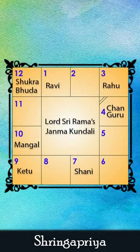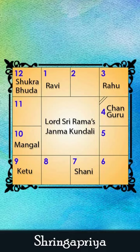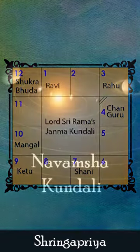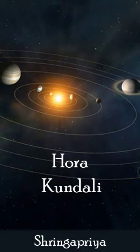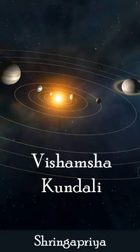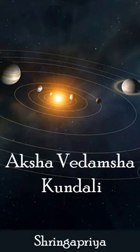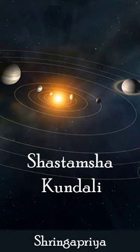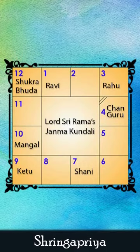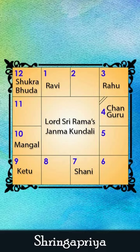In turn, many other horoscopes can be designed based on this. The different horoscopes are Navamsha Kundali, Hora Kundali, Saptamsha Kundali, Shodashamsha Kundali, Vishamsha Kundali, Aksha Vedamsha Kundali, Shashtamsha Kundali, and so on. Astrology says that likewise more than 150 horoscopes can be designed.